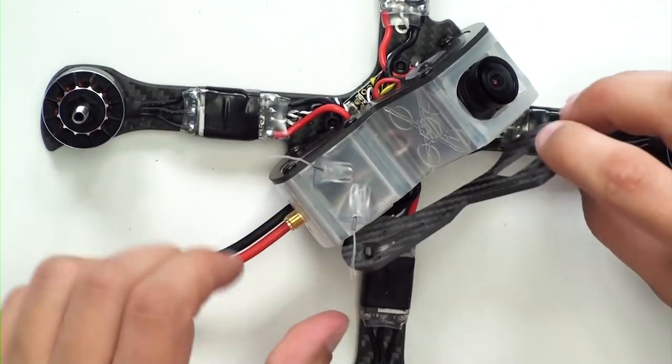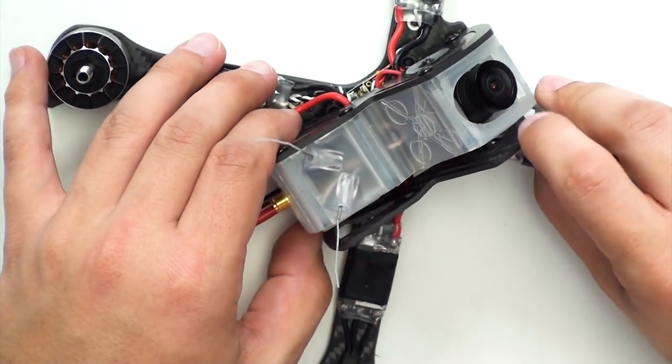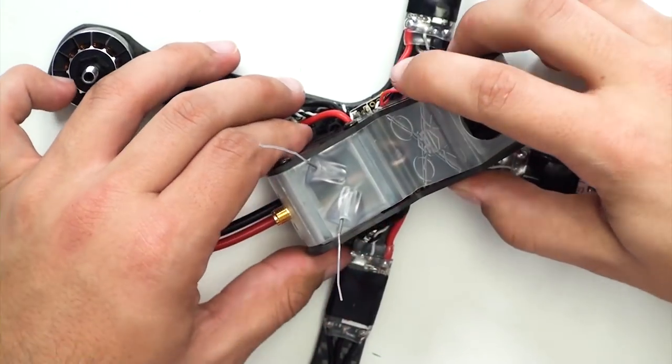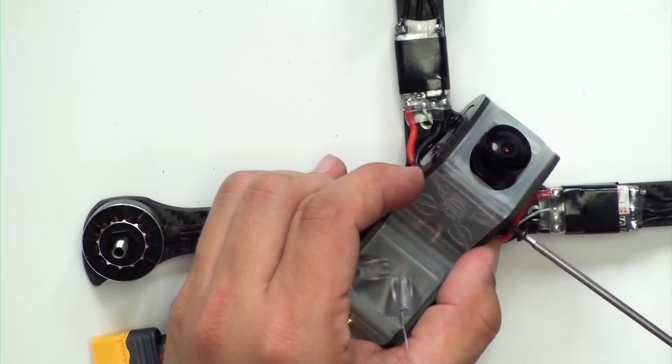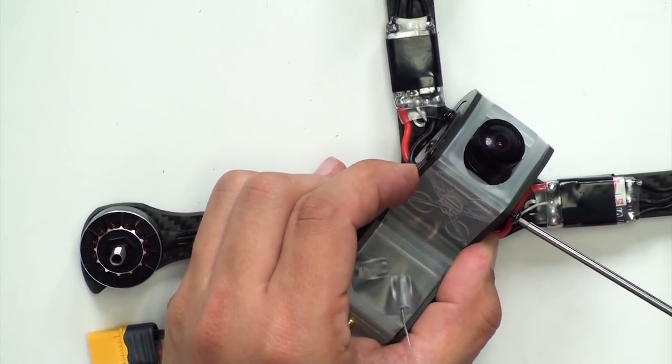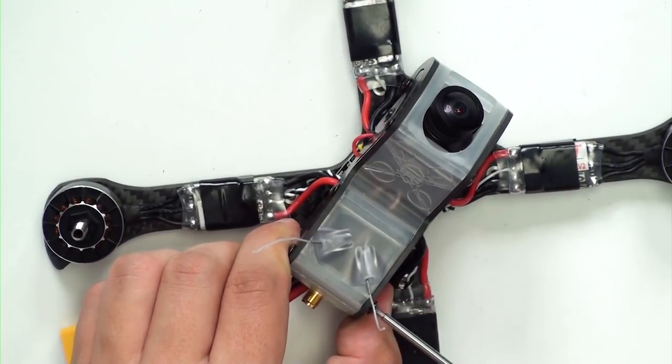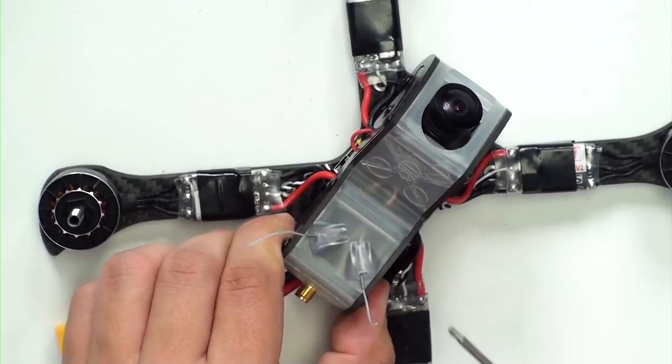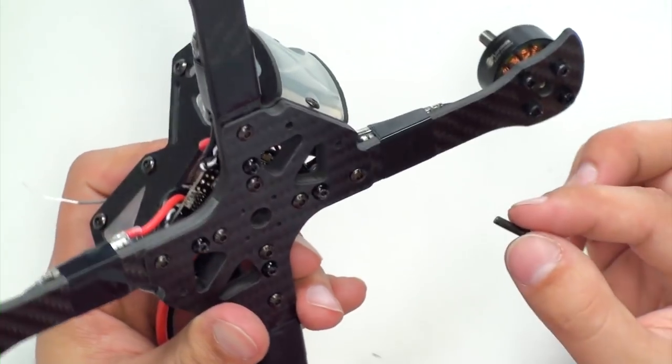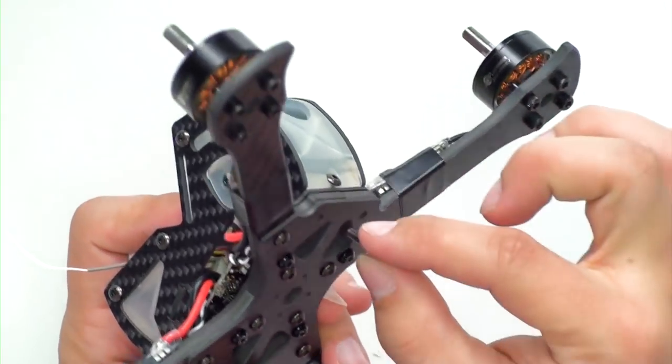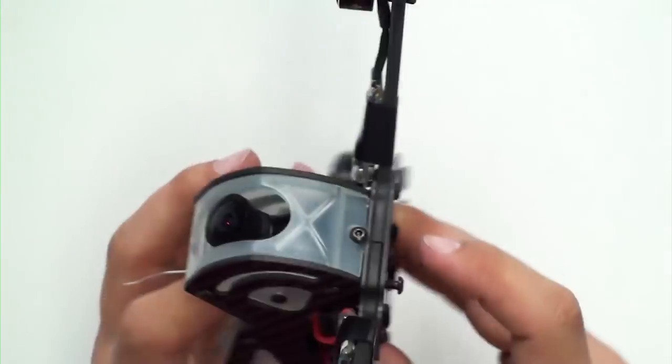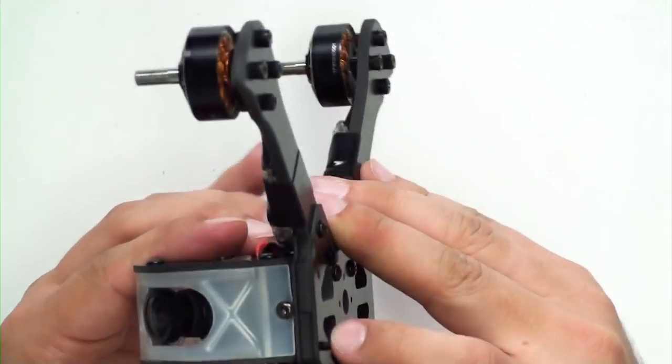Grab your other side plate, put that in place, and start installing the bolts on the side. Take your other long remaining bolts in the kit and we're going to put them through the bottom plate to attach to the body.